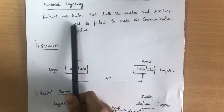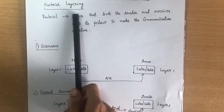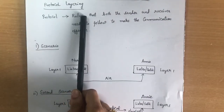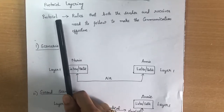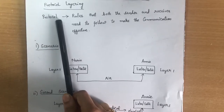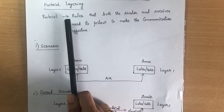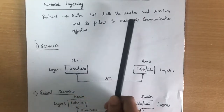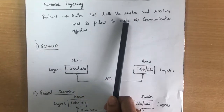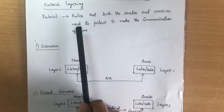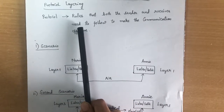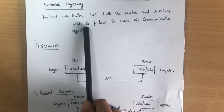In today's lecture, we are going to learn about a topic called protocol layering. First, we should know what a protocol is. Protocol is a set of rules that a sender has to follow when communicating with the receiver. You can say that the rules that govern data communication are called the protocol.